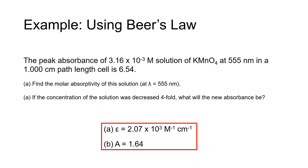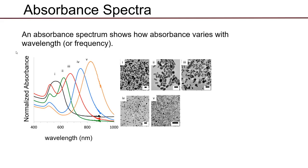In the real world, Beer's Law doesn't hold at all concentrations because there is a point at which that linearity breaks down. Most of the time when making real-world measurements, for Beer's Law to hold, your absorbance needs to be between roughly zero and about 1.2 absorbance units. An absorbance of 6.54 would not typically be in the linear regime, but we can treat it that way for this problem. An absorbance spectrum shows how light is absorbed as a function of wavelength, with wavelength in nanometers on the x-axis and absorbance on the y-axis.